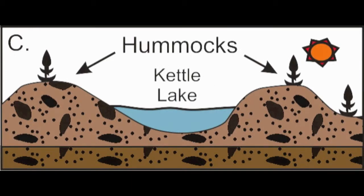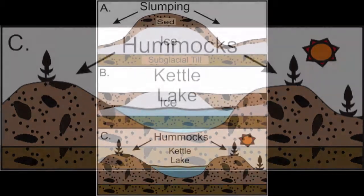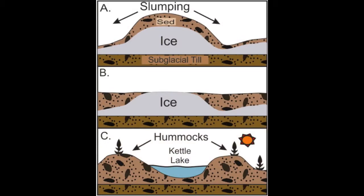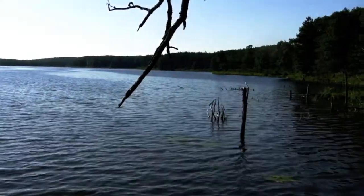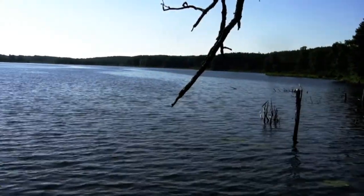The tunnel channel is narrow here. Sediment from on top of the glacier slumped into the tunnel channel, formed hummocky topography, and reduced the width of the tunnel channel.